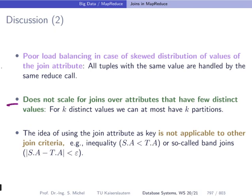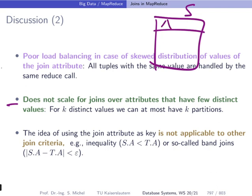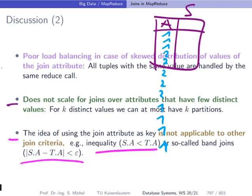Another scalability problem arises if the join attribute has only very few distinct values. For example, if attribute a has only two distinct values, we can have at most two partitions, which limits how well this algorithm can scale to very large datasets. A third limitation is that this algorithm only works for equi joins or natural joins testing for equality. If you have an inequality or a so-called band join, it is not possible to apply this algorithm.